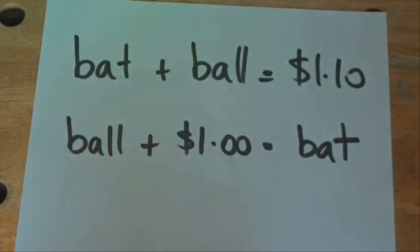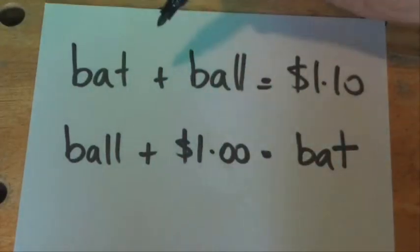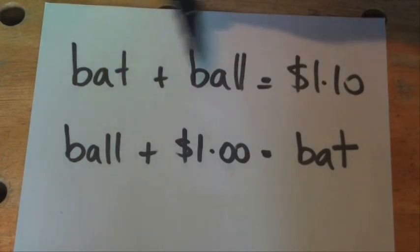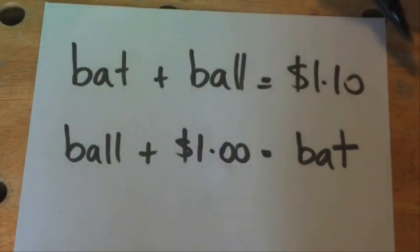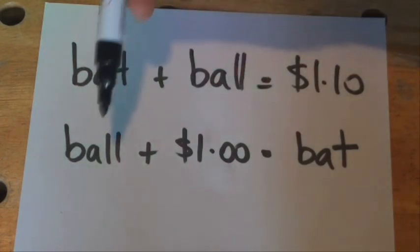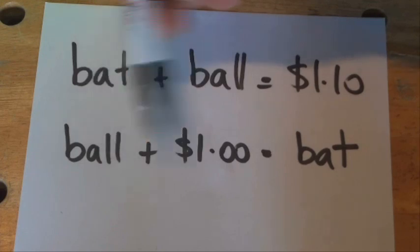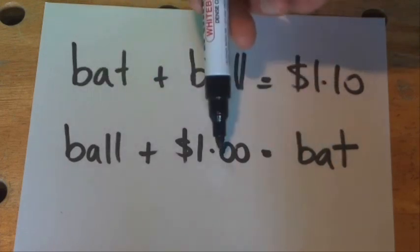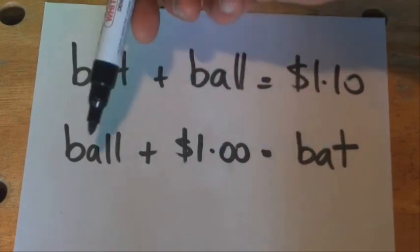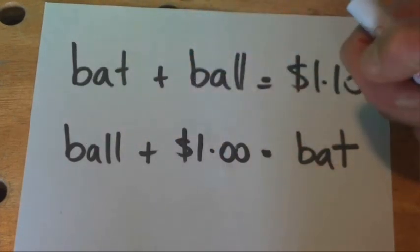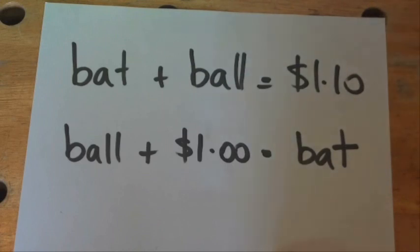So if we think about those two conditions: bat plus ball equals $1.10, and the second condition is that the bat has got to be $1 more than the ball, or ball plus $1 equals the bat.